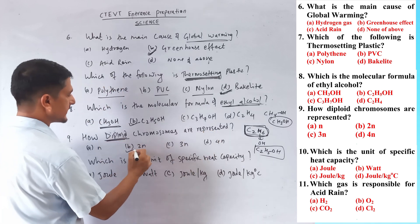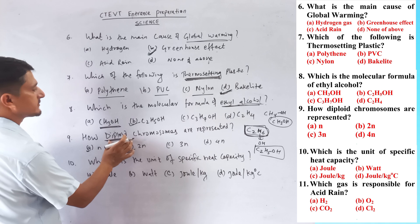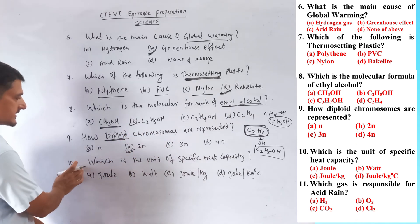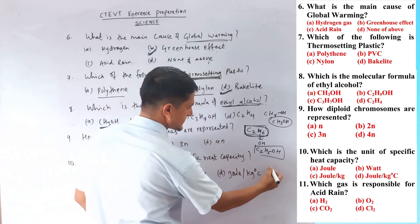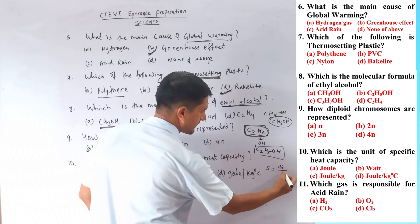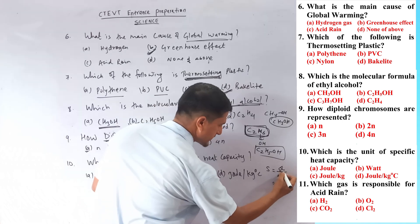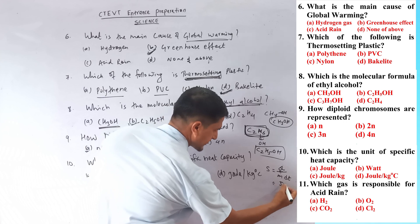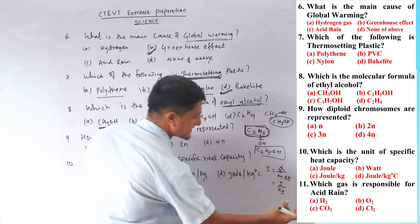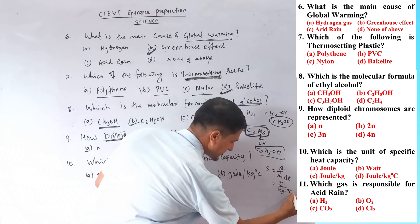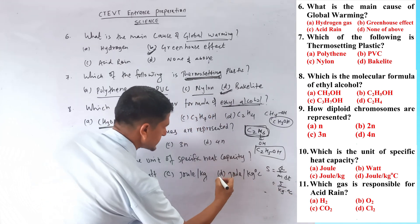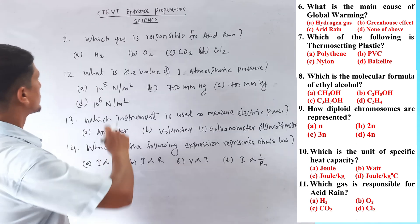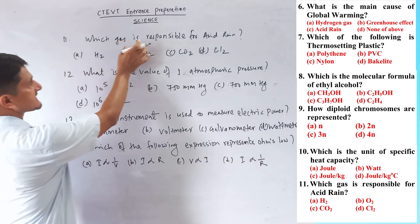Question number nine involves haploid chromosome representation. Question number ten: what is the unit of specific heat capacity? Specific heat capacity (s) equals Q divided by m times delta T, where Q is heat energy in joules, m is mass in kg, and delta T is difference in temperature in degrees Celsius. The correct answer is joule per kg degree Celsius.